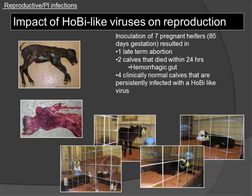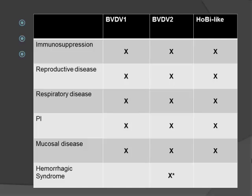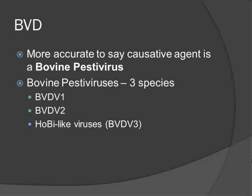The next question was whether these PI animals can transmit the virus. BVD1, BVD2, and Hobi are all immunosuppressive; they all cause reproductive disease, respiratory disease, and can all cause persistent infection. Mucosal disease has been reported in the field in both Italy and Brazil. Hemorrhagic syndrome has so far only been reported with type 2 BVD. You cannot go out in the field and tell by smell, sound, or observation which pestivirus species caused an outbreak of disease.